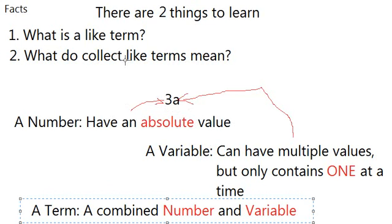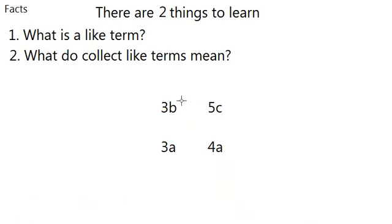Then what is a like term? A like term has, as I've said, the same variable. And for a variable, we have A, B, C and A.